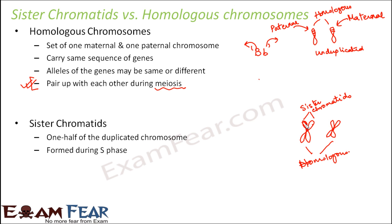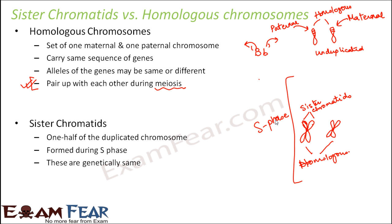Sister chromatids are formed during the synthesis (S) phase of interphase. Before the S phase, the chromosome remains unduplicated. Sister chromatids are genetically identical to each other. But homologous chromosomes are not necessarily genetically identical — they can have the same alleles or different alleles. So genetically, homologous chromosomes might not be identical, whereas sister chromatids will always be genetically identical.